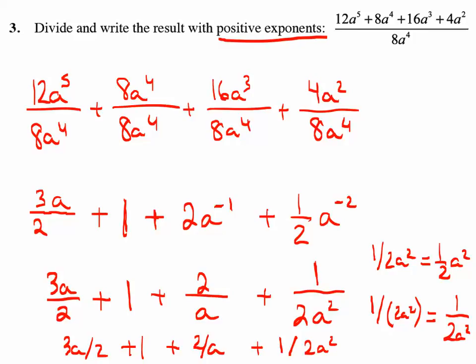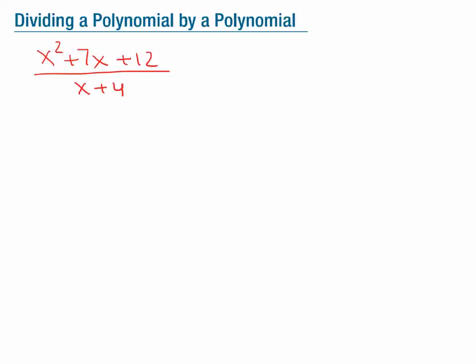All of this was division by a single term, or a monomial. Now let's jump a little further — dividing a polynomial by a polynomial. The homework divides this into two different types: one says divide by factoring numerators and then dividing out common factors, and the other says divide using the long division method.